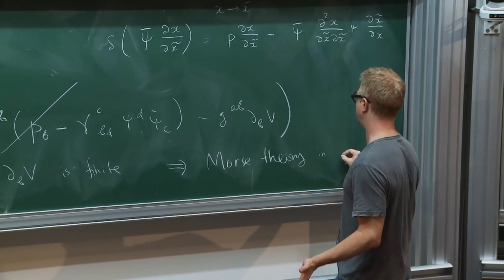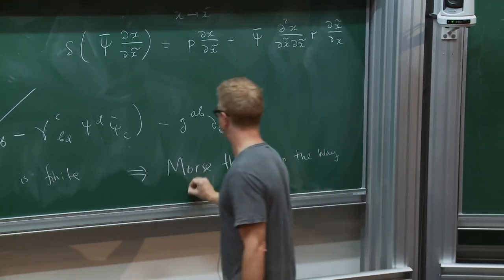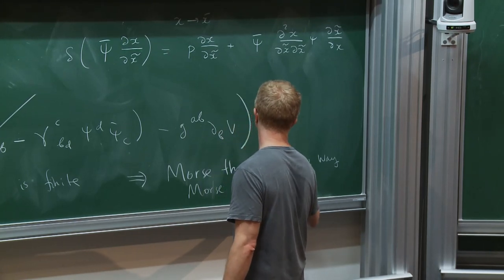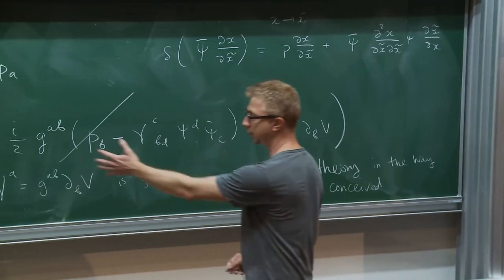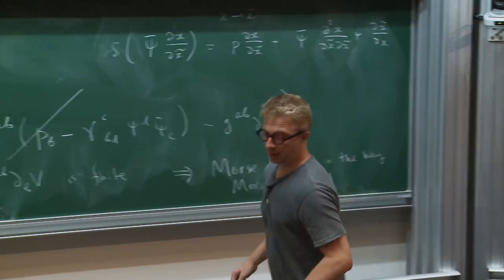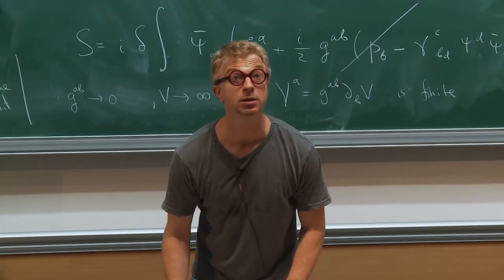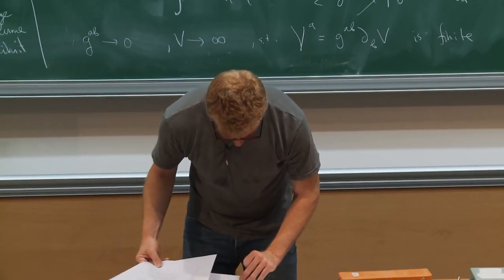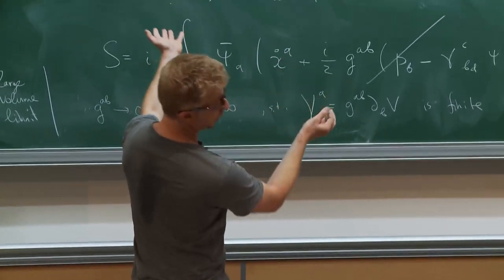If you're interested only in correlators of delta-closed observables — variables corresponding to de Rham cohomology of target space — you can play with this action. There is an interesting limit where g goes to 0 (large volume limit) and V goes to infinity such that the gradient vector field remains finite. In this limit, the metric term disappears and you end up with a theory which looks almost free because momenta enter the action linearly, but it's not quite free because it knows about the topology of target space — many critical points and so on. From this you can recover Morse theory in the way Morse conceived it.